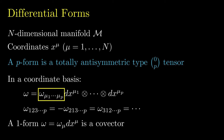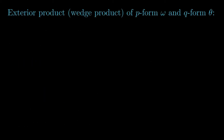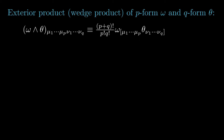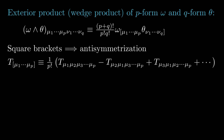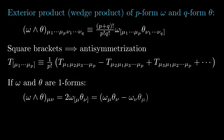Note that a one-form is simply a co-vector. The exterior product, or wedge product, of a p-form omega and a q-form theta is a p-plus-q form defined as follows. The square brackets surrounding a set of indices denote anti-symmetrization. So, for example, for any type (0,p) tensor T, the anti-symmetric part of T has components given by this expression. If omega and theta are both one-forms, then the wedge product omega wedge theta has components omega-mu theta-nu minus omega-nu theta-mu.